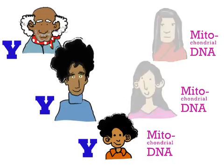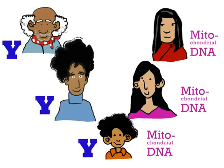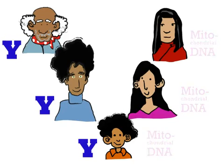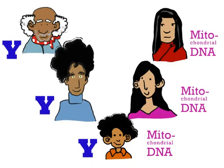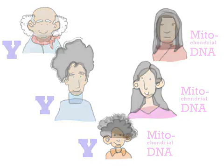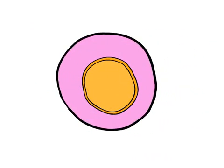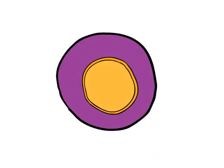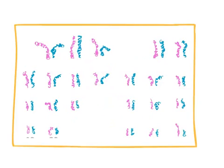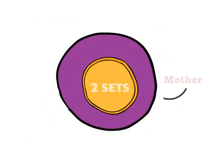For this reason, ancestry along your father's line or your mother's line is easier to trace using the Y chromosome or mitochondrial DNA. When sperm and egg cells join together at fertilization, they create a single cell with two complete sets of 23 chromosomes—one set from your mother and one from your father.